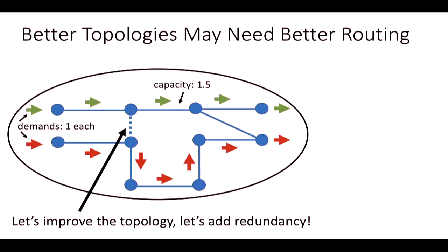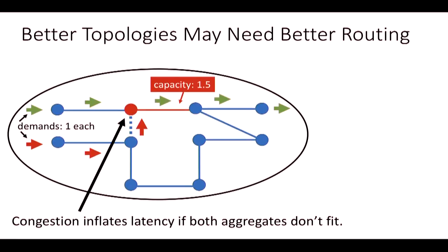However, we don't like trees because they don't provide any resilience against link failures. So we change the topology and add a link. Notice that adding this link changes routing behavior—the shortest path for the bottom aggregate now goes to the top. Since link capacity is 1.5 and we have two demands of one unit each, we have congestion. Congestion causes queuing, which inflates latency. Congestion will also eventually make aggregates throttle because congestion control kicks in, hurting everyone's throughput. So we really don't want congestion within our network.